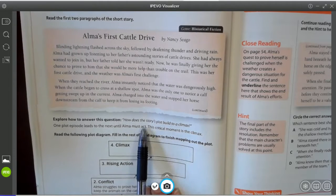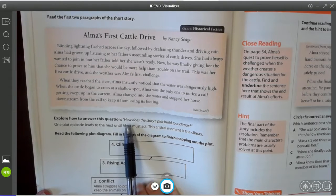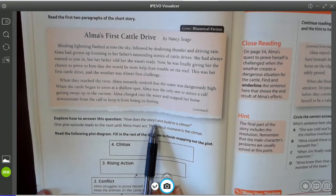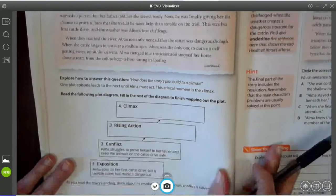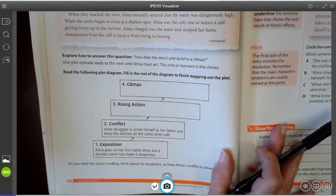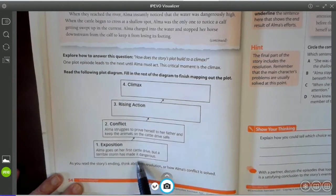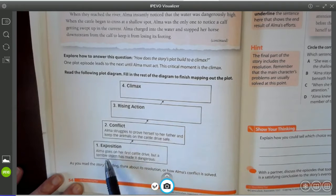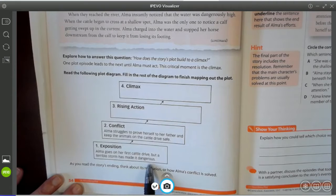All right. So on the end of grade test, a question for this standard might sound like this. How does the story's plot build to a climax? So let's think that through. One plot episode leads to the next until Alma must act and the critical moment is the climax. So the exposition, which I said was the setting or the characters. Alma goes on her first cattle drive, but a terrible storm has made it dangerous.